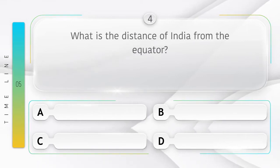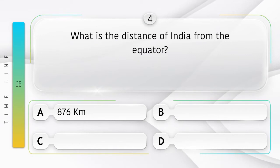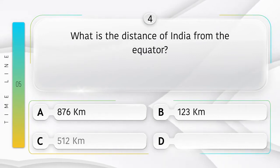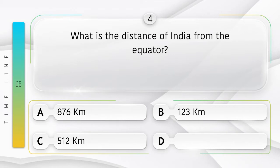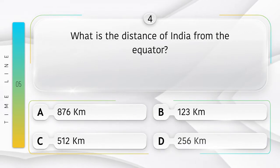Which is the largest state of India in terms of area? Option A: Rajasthan, B: Punjab, C: Haryana, D: Goa. Answer is option A: Rajasthan.